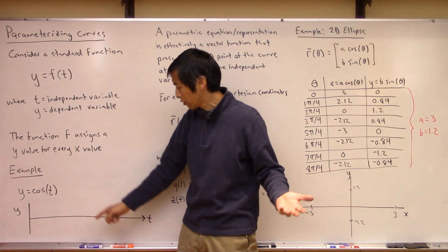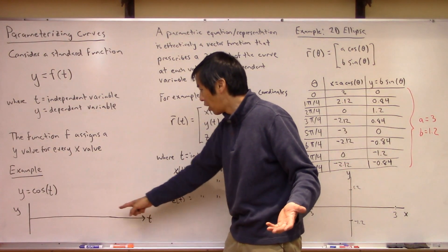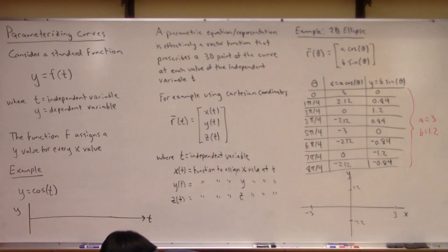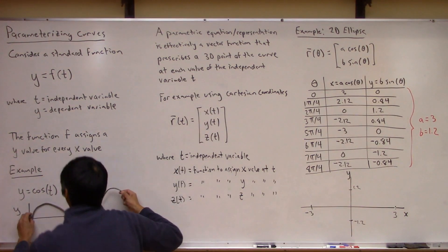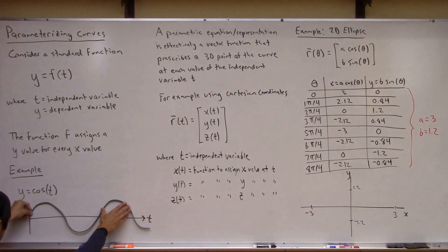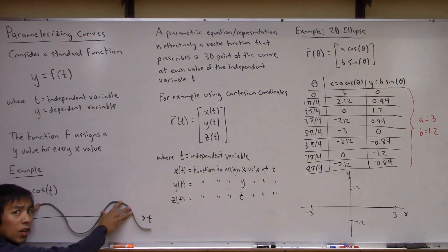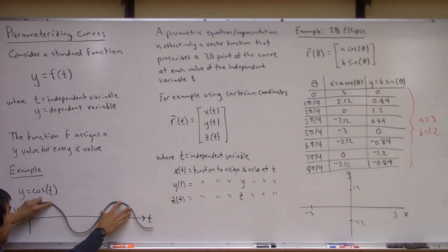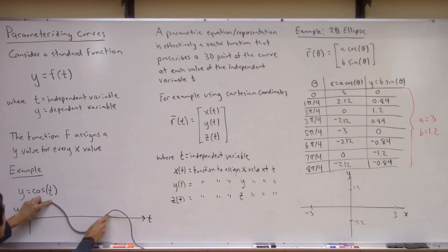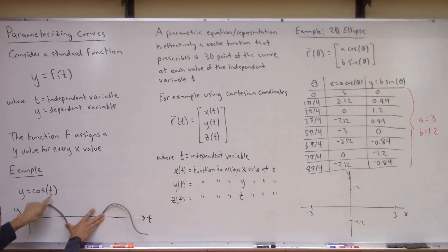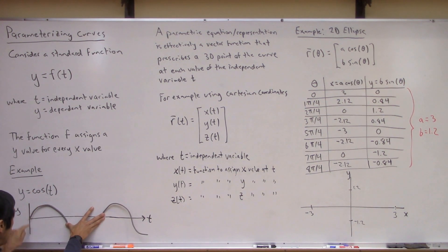Everyone knows what that looks like. If I were to try to plot y versus t, it's going to look like this — a curve that is a one-dimensional object, in the sense that as long as you know the single independent variable t, you know every point along this curve.